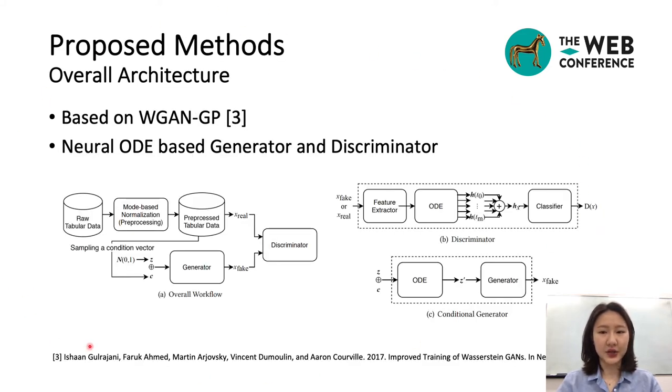This is the overall architecture of OCTGAN. OCTGAN is fundamentally based on WGAN-GP and neural ODE. First, we pre-processed the raw dataset with mode-based normalization and sampling a condition from pre-processed data. The condition is concatenated with a noise vector z, which has Gaussian distribution. Generator can create a fake table using the concatenated vector and we feed it into the discriminator. Discriminator decides whether input is a fake sample or not. There are more details about discriminator and generator, which I'll explain from now on.